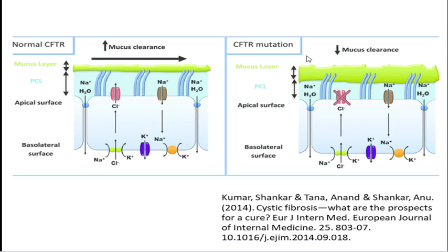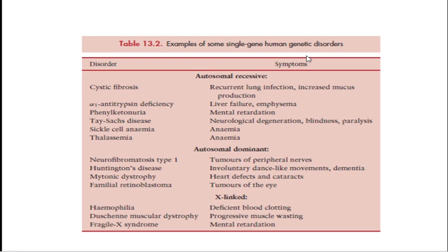So what happens? The chloride ion starts to deposit in the cell membrane, and water molecules cannot hydrate the cell membrane. This results in formation of a thick mucus layer. The dirt or bacteria coming through the airway of the lungs cannot be cleared due to this thick mucus. The person will have repeat lung infections. For a normal person, the mucus is thick but slippery, so dirt and toxins entering the lungs can be easily removed.